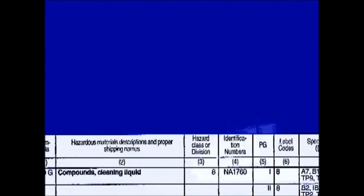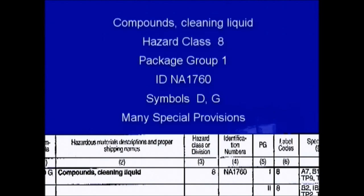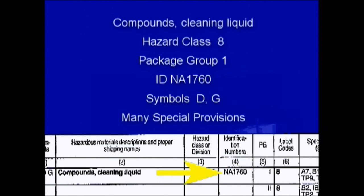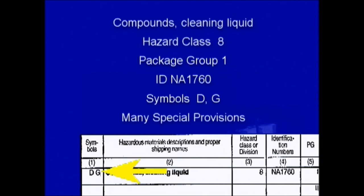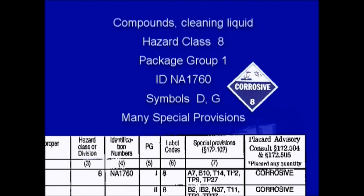Our next example is compounds cleaning liquid. Using the four-step process, we see that this material has a hazardous class of 8 and falls into packing group one. It has a North American identification number of NA1760. Its symbols are D, which designates this material's proper shipping name as appropriate only for domestic transportation, and G, which indicates that the technical name must accompany the basic description. The material requires a corrosive label and corrosive placard, and column seven indicates that there are many special provisions. That's it for Lesson 1 — stop the video and take test one in your student guide.